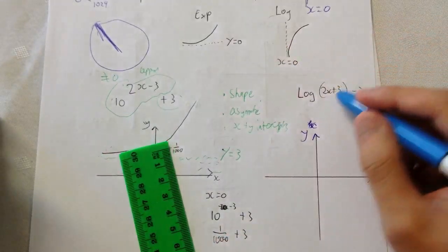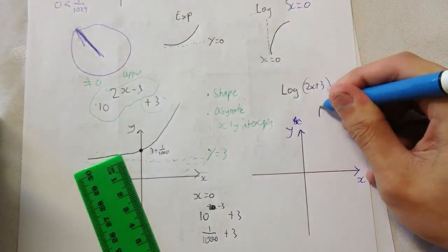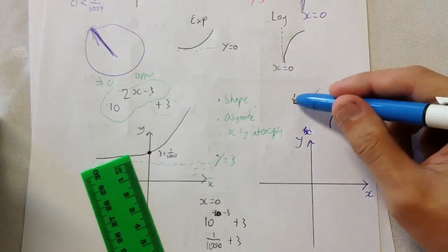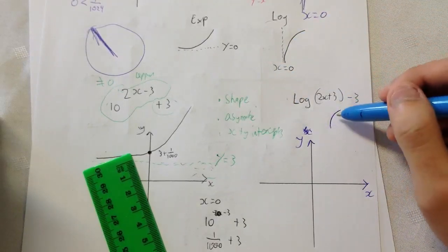So, again, we need to consider a shape. So, this shape is going to look like this. Okay? This is positive and, you know, that's positive. So it's going to look something like that.